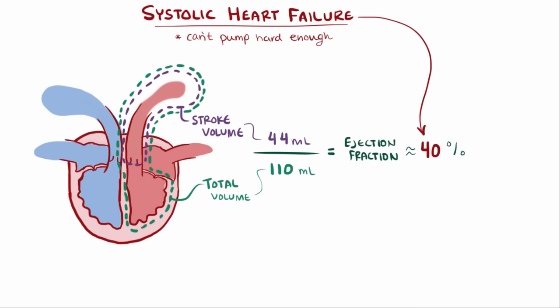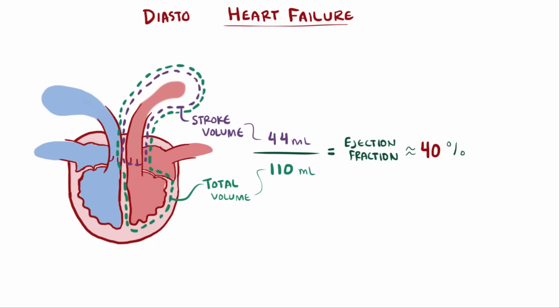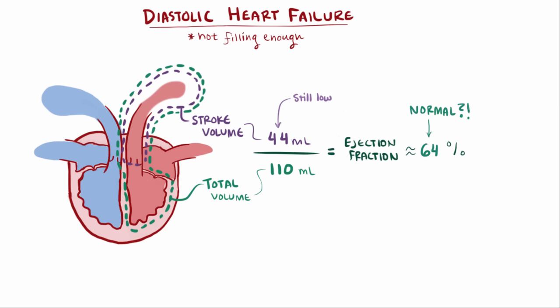In addition to systolic heart failure, there is also diastolic heart failure, where the heart is squeezing hard enough but not filling quite enough. In this case the stroke volume is low, but the ejection fraction is normal. Since it's not filling enough, there's a low total volume — say about 69 milliliters — and even though both values are low, 44 milliliters divided by 69 milliliters is still 64%.